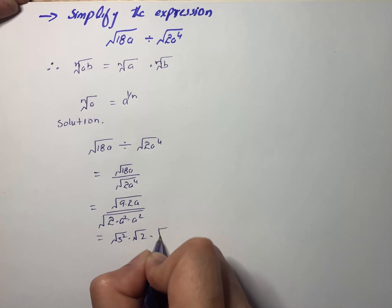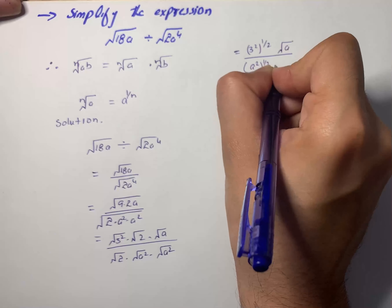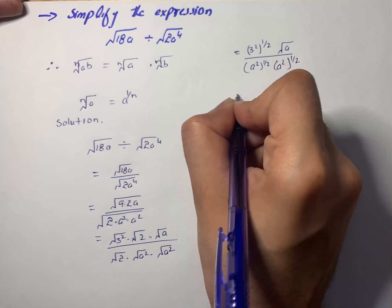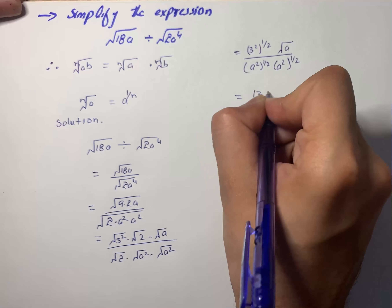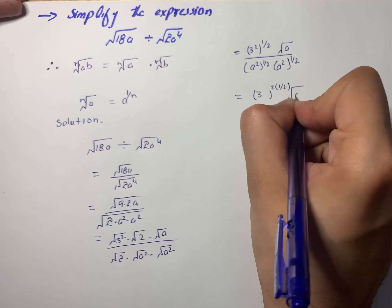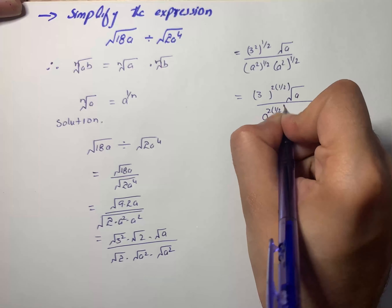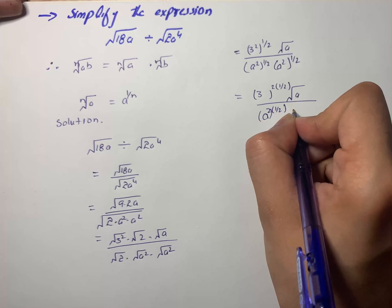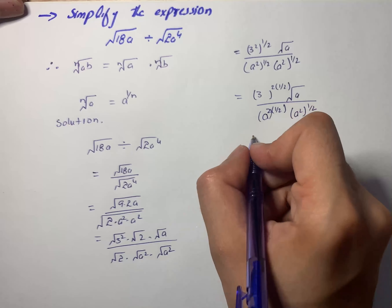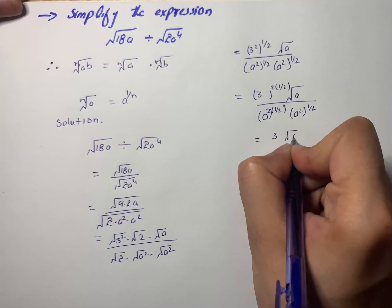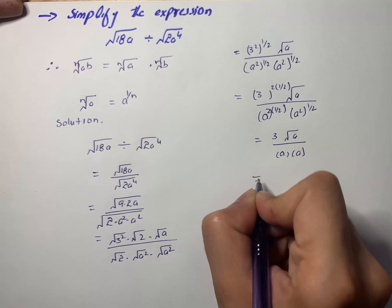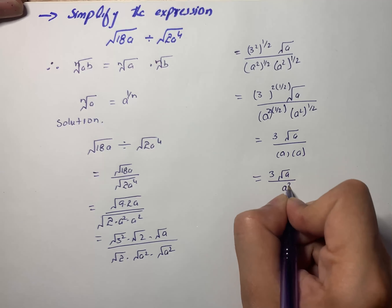Now we use the relation between radical and rational exponent notation to simplify the expression. We rewrite: 3 squared raised to the power of 1/2, times the square root of a, divided by a squared raised to the power of 1/2, times a squared raised to the power of 1/2. On simplification, 3 squared times 1/2 gives 3, and a squared times 1/2 gives a, for each factor in the denominator. This gives us 3 times the square root of a, divided by a times a, so the final solution is 3 square root of a divided by a squared.